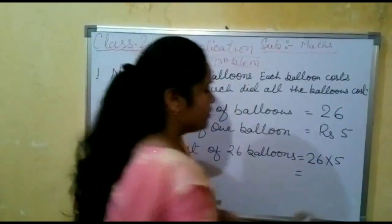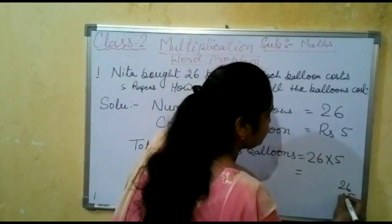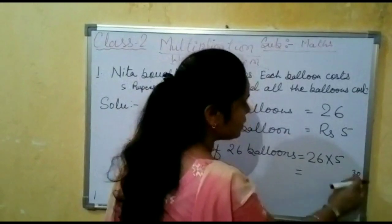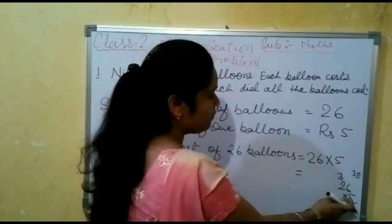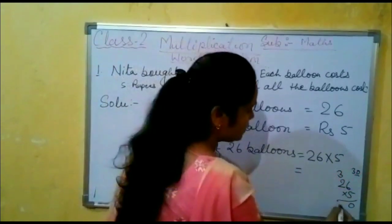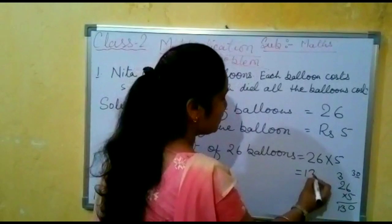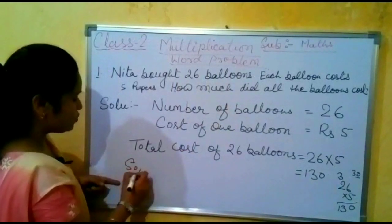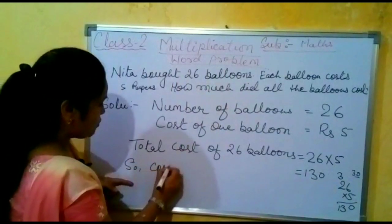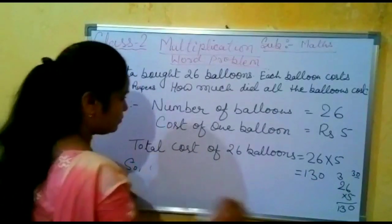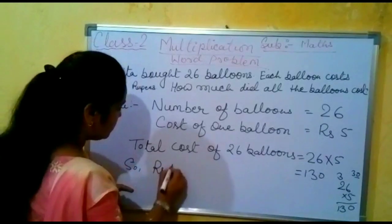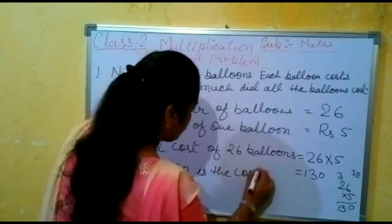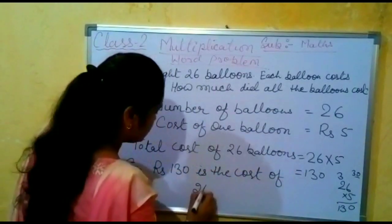Now we will write it in vertical form. So 5 times 6 are 30. We write 0 here and 3 is carried forward. Now 5 twos are 10, and 10 plus 3 becomes 13. So our answer is 130. Therefore, rupees 130 is the cost of 26 balloons.